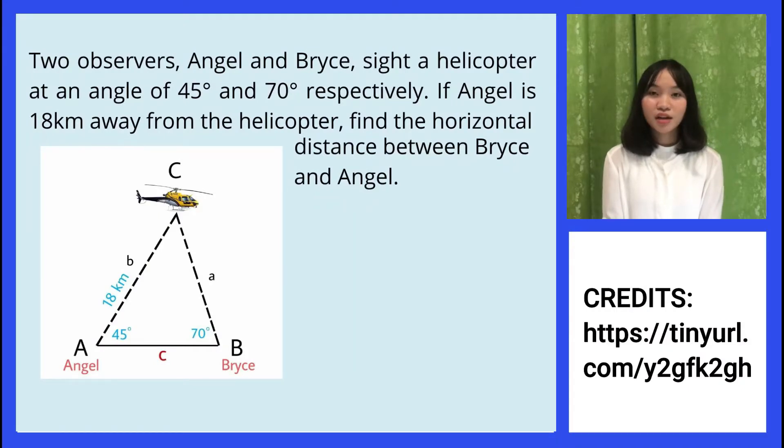Good day everyone, I am Julia Nicole Dimanggubat and I will be discussing a sample problem regarding the law of sines. Two observers, Angel and Bryce, sight a helicopter at an angle of 45 degrees and 70 degrees respectively. If Angel is 18 kilometers away from the helicopter, find the horizontal distance between Bryce and Angel.